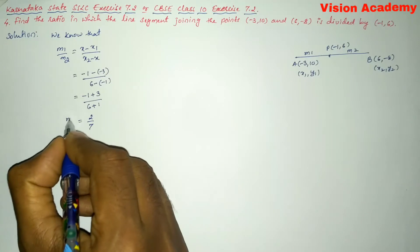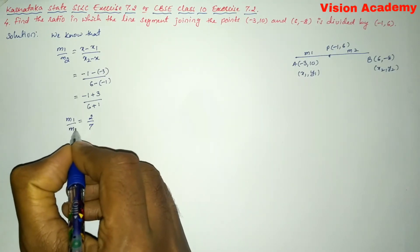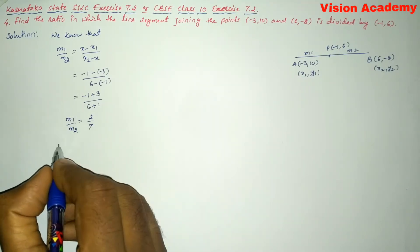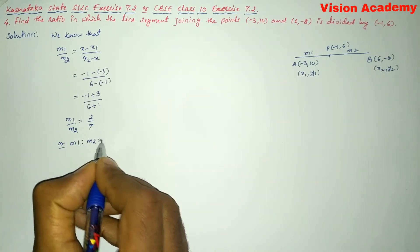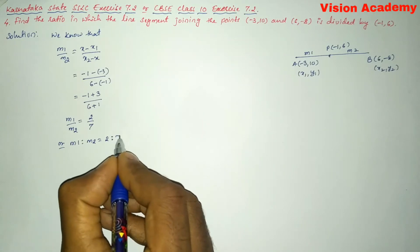Therefore, we can write M1/M2 is equal to 2/7, or we can write M1 to M2 is equal to 2 to 7.